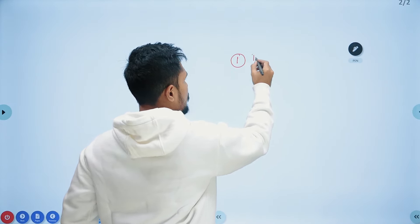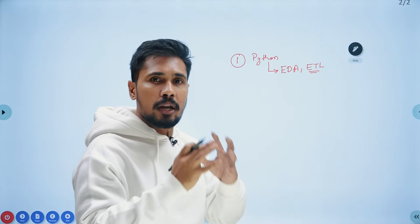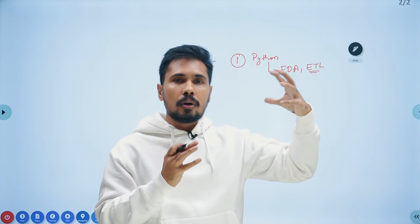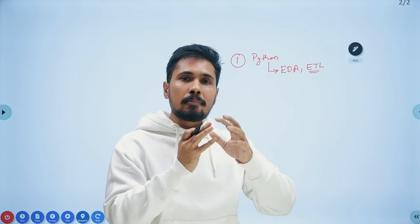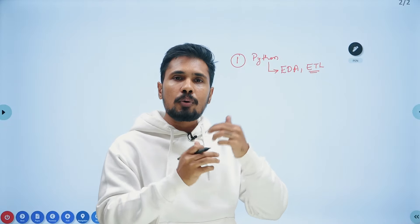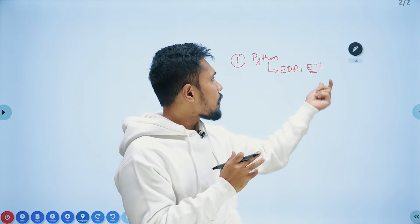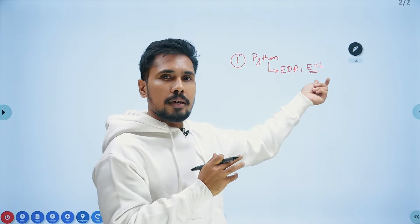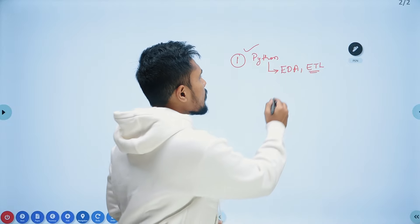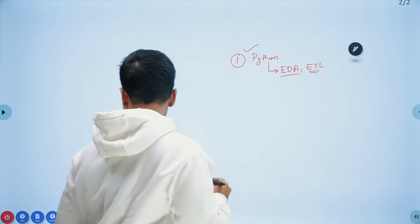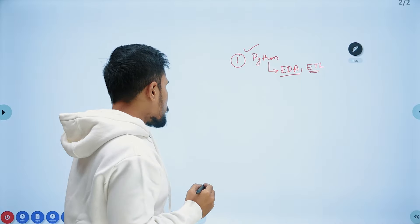ETL means: from a website you collect the data, you transform it by cleaning it, and then you load it. To perform those operations you need a solid knowledge of Python. EDA means that when someone provides you with a dataset, you need to be in a position to analyze it — performing basic analysis and basic statistics.